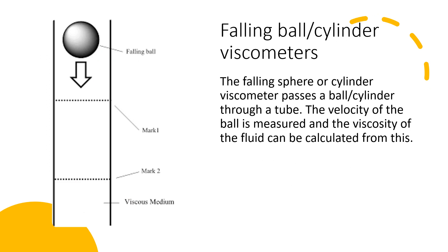Next is the falling ball or cylinder viscometer. It passes a ball or a cylinder through a cylindrical tube, the velocity of the ball is measured, and then the viscosity of the fluid can be calculated from this. It's important to note that the falling ball is more common than the falling cylinder, because the cylinder is only used for high pressures and foamy liquids.